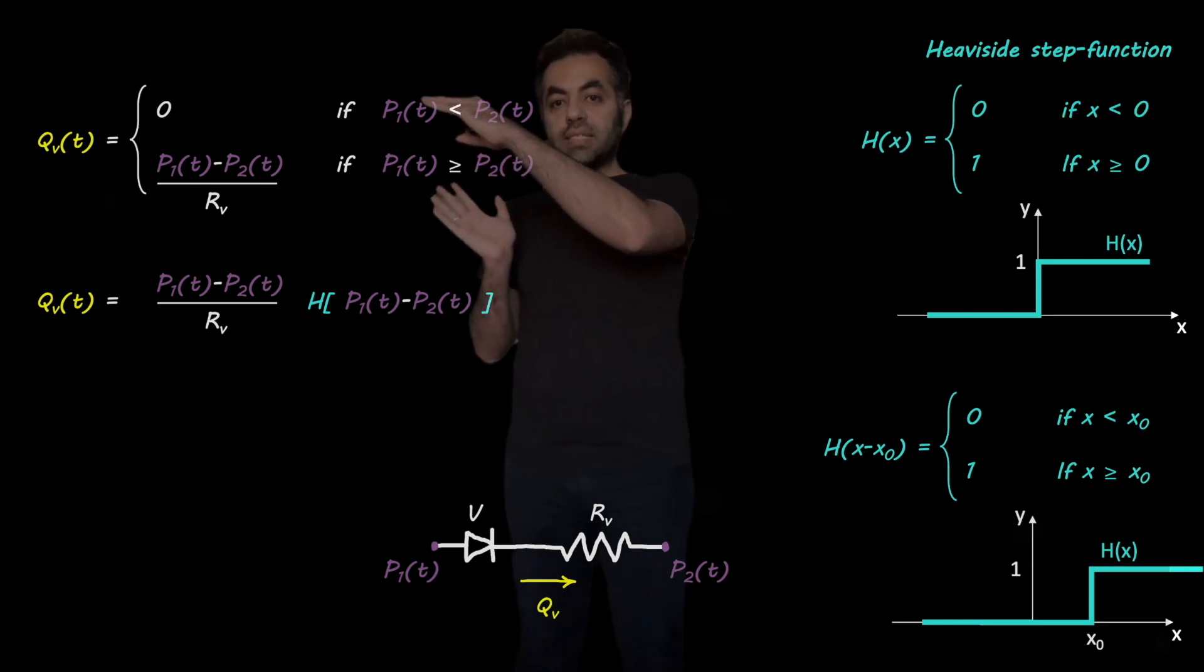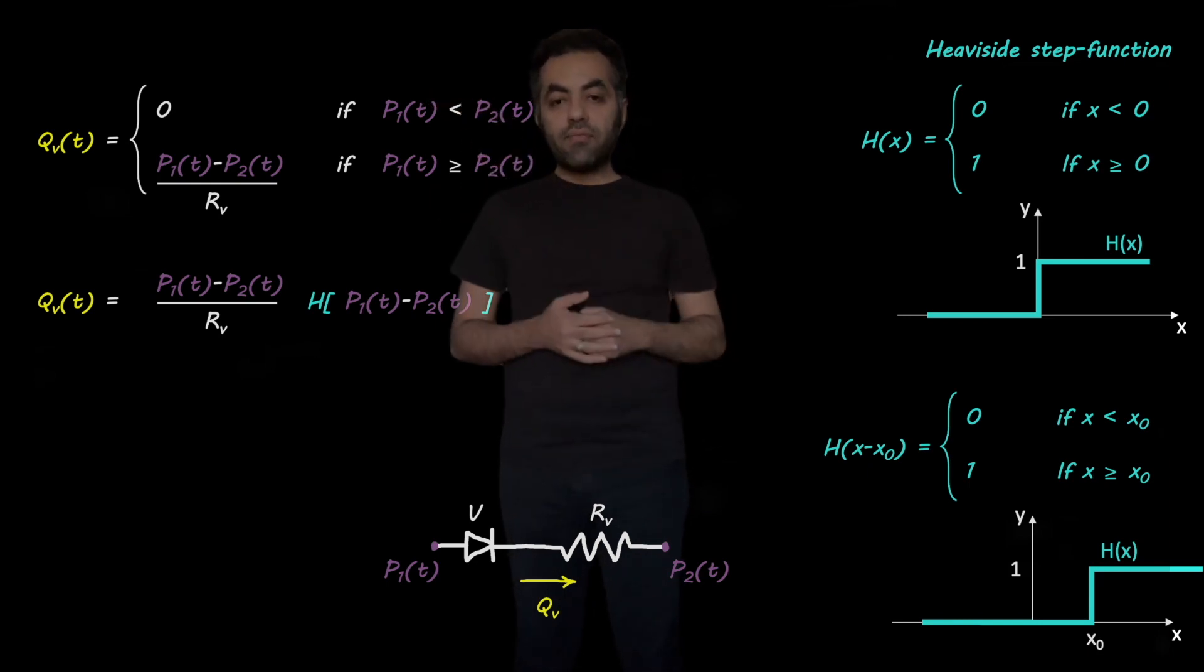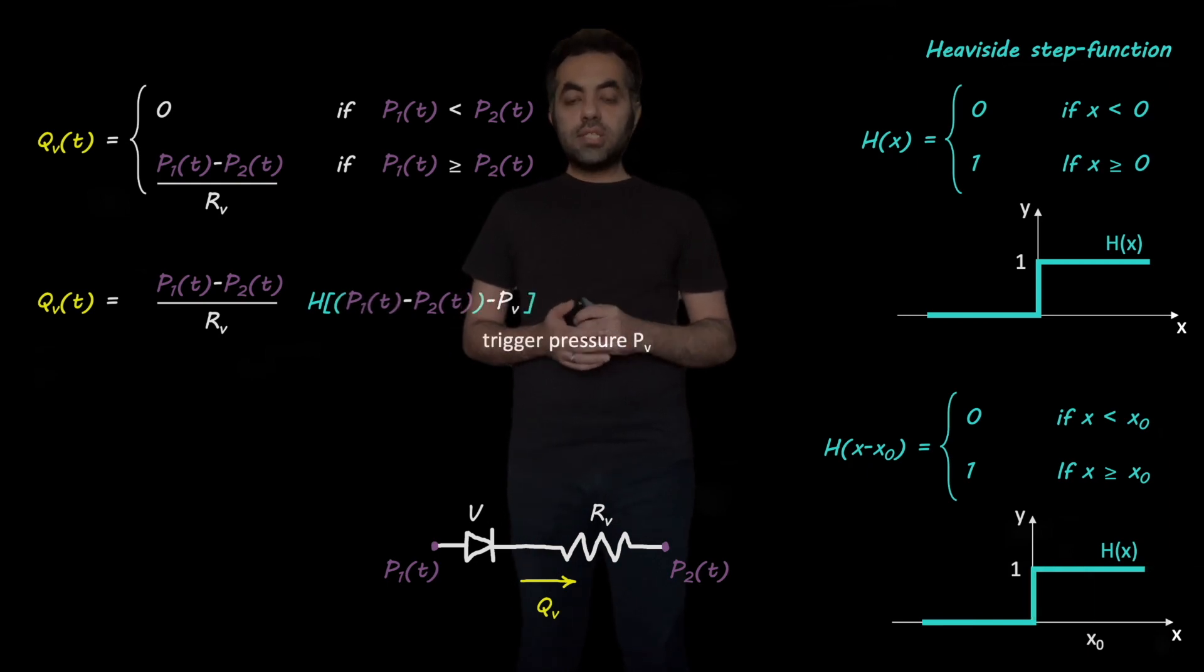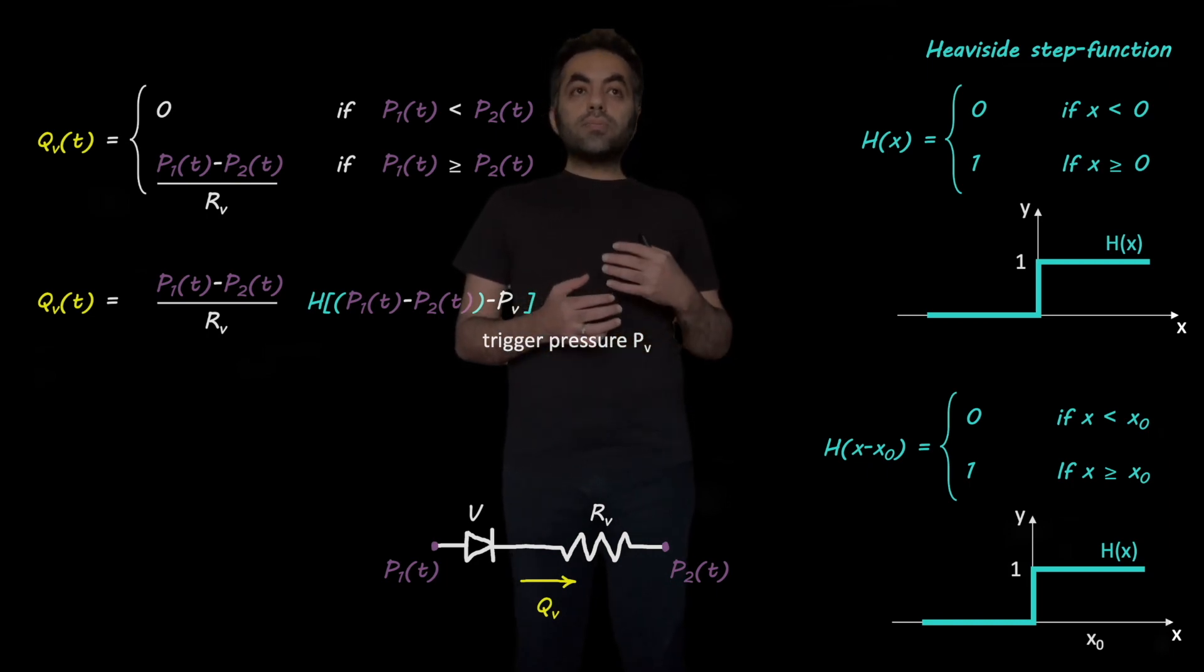Therefore, it gives us exactly the same two equations that we have here. But also we can include an additional term here. I call it a trigger pressure. This allows us to simulate the valve behavior such that whenever the pressure across the valve surpasses a threshold value, PV, only in those circumstances, in those situations, the valve opens.